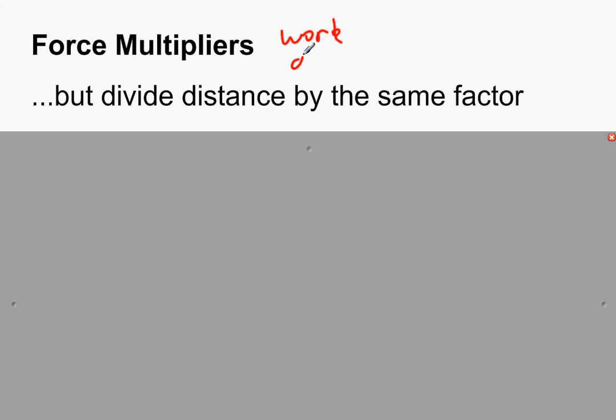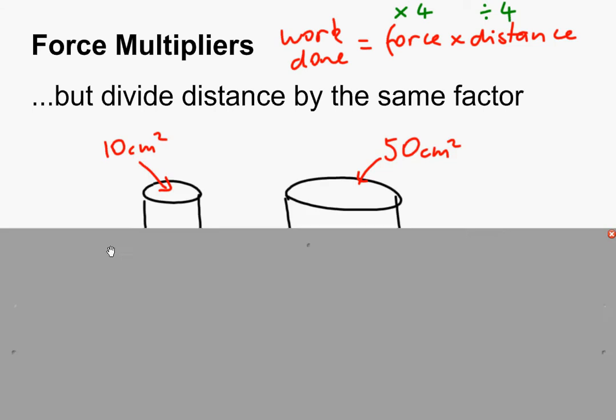So you may or may not remember that work done equals force times distance. Work done meaning energy transferred. Well, if we multiply the force by a factor of four, it turns out we divide the distance by a factor of four, meaning that the amount of work done is the same on each side. The energy transferred is the same. We're not getting more energy out.